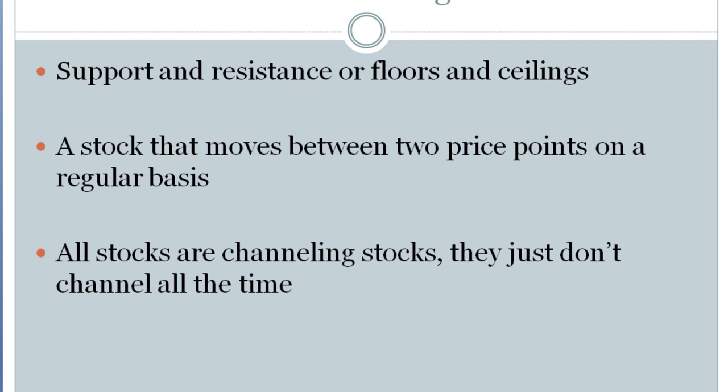That's referred to as a channeling stock. A channeling stock is simply a stock that moves between two price points on a regular basis. Some people call this support and resistance; other people like to think of it as floors and ceilings. The neat thing to understand here is that all stocks are channeling stocks — they just don't channel all of the time. So let me give you an example of what your charts will look like when you pull them up for the first time.